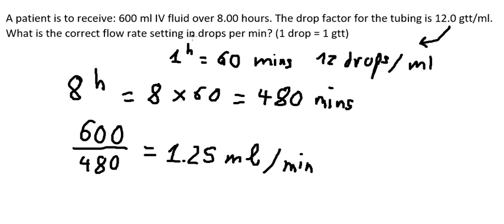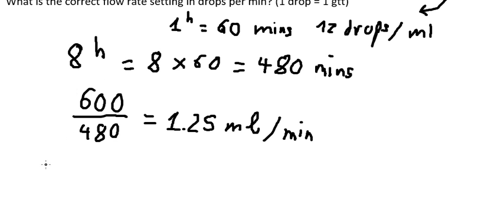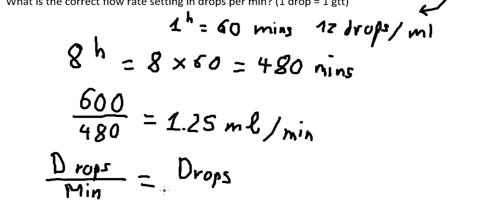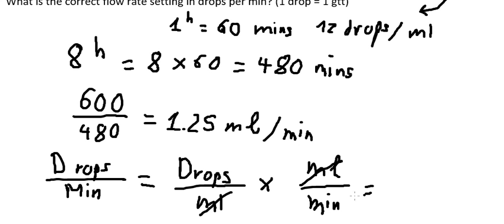So the question they want to find drops per minute. So we have drops per minute equals to drops per milliliter multiplied by milliliters over minute, because this one and this one they simplify.